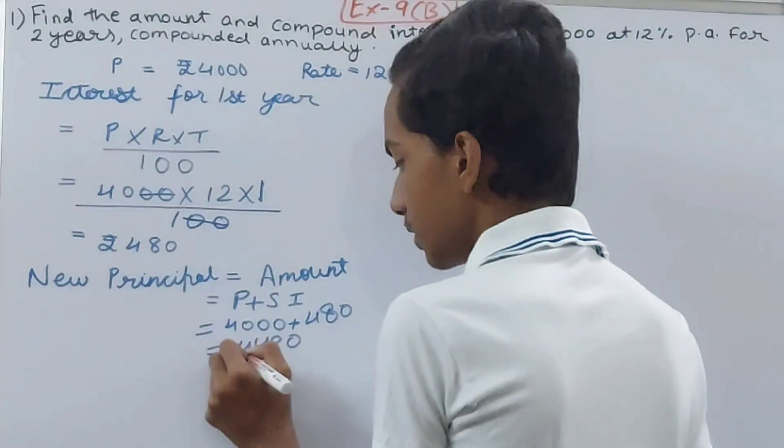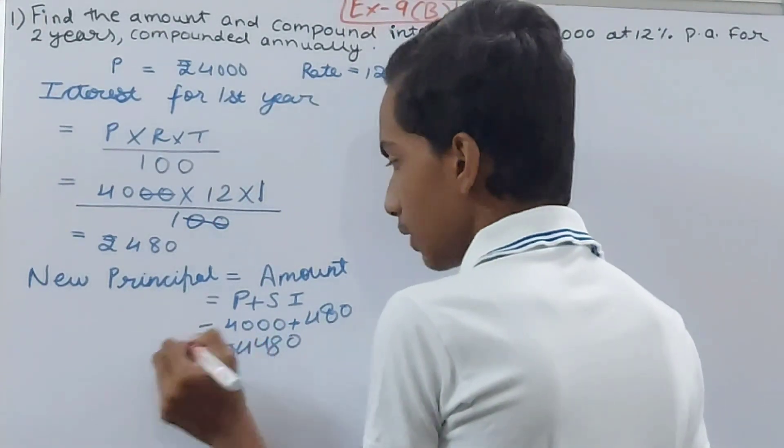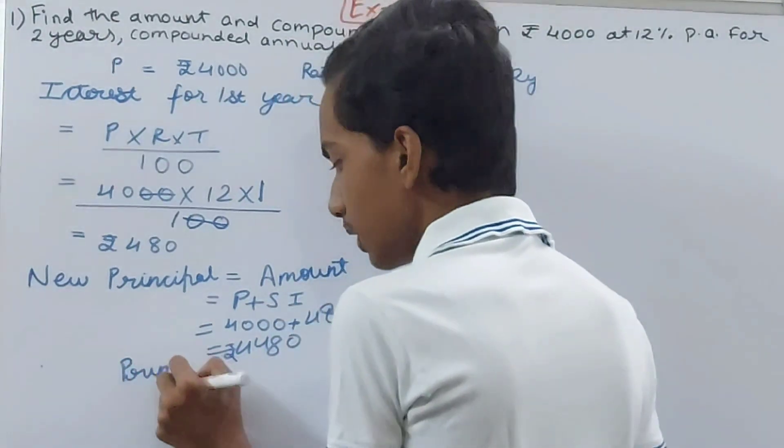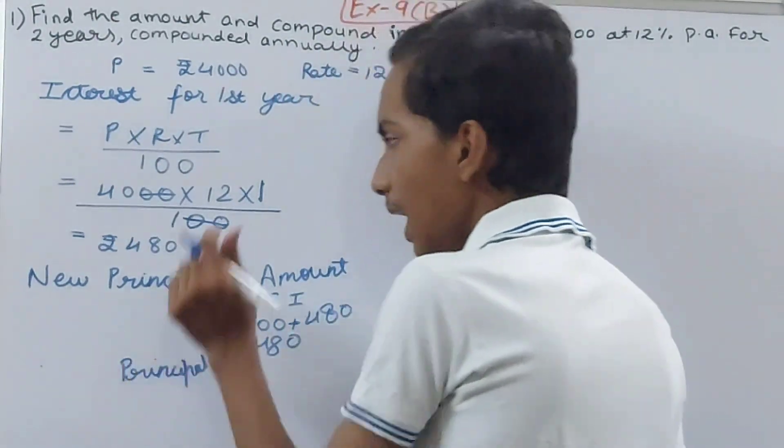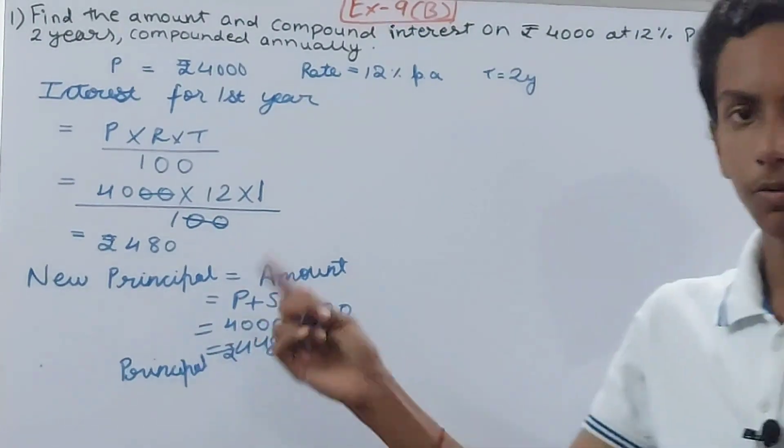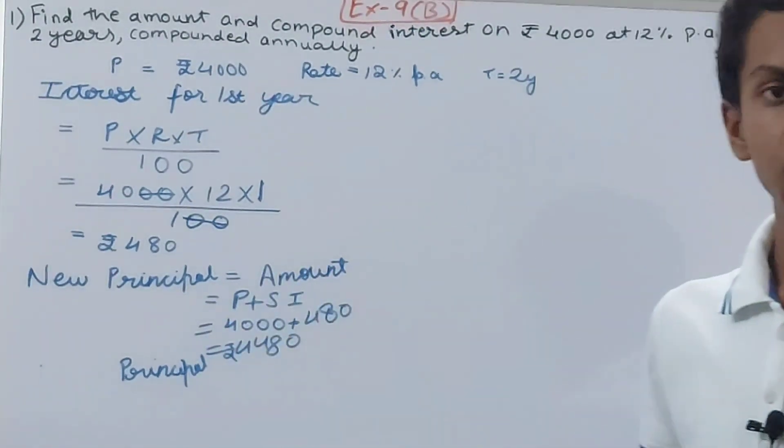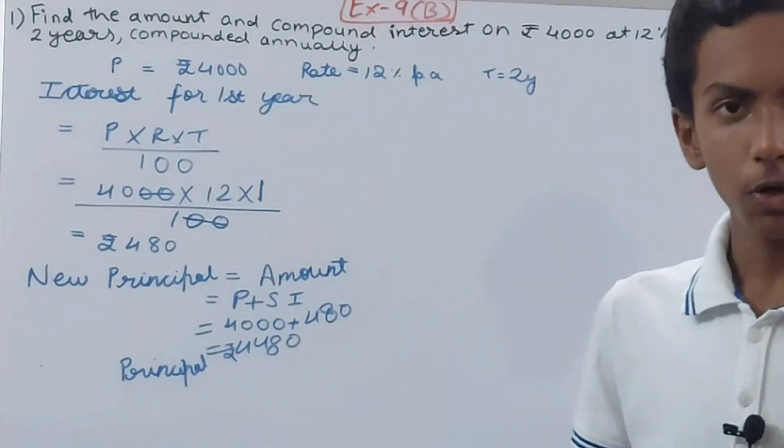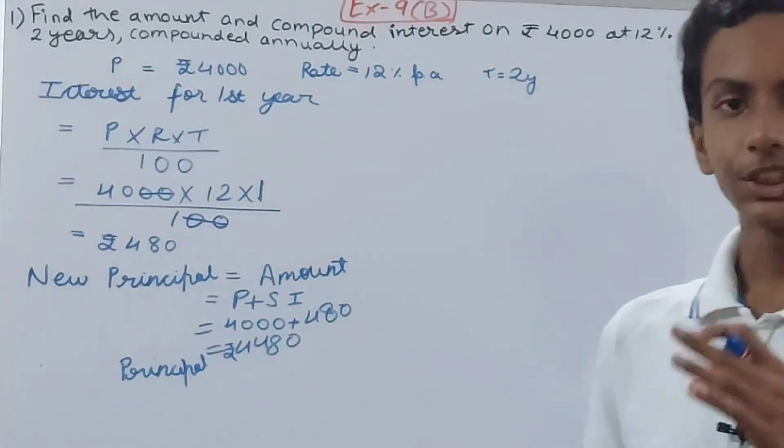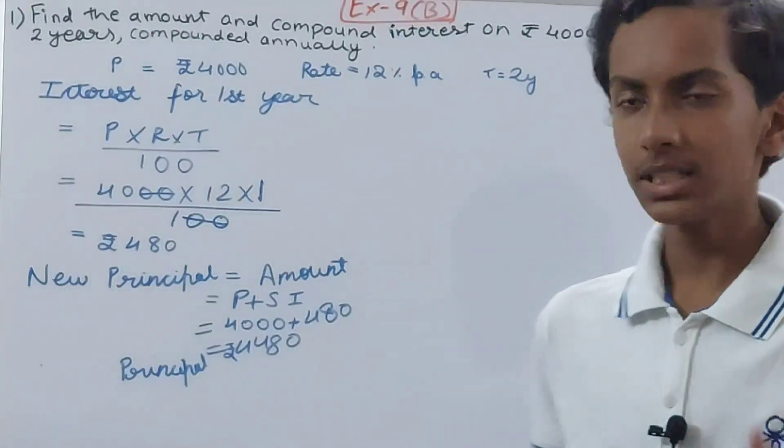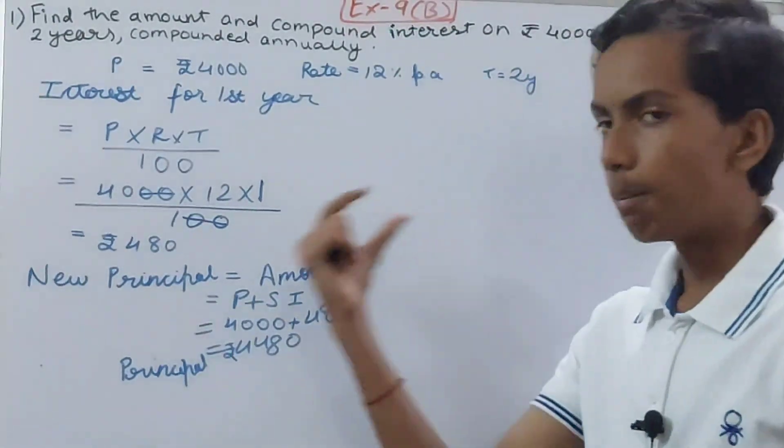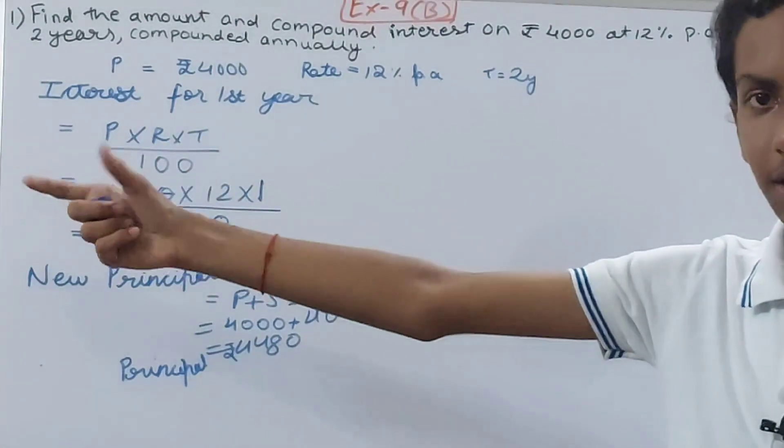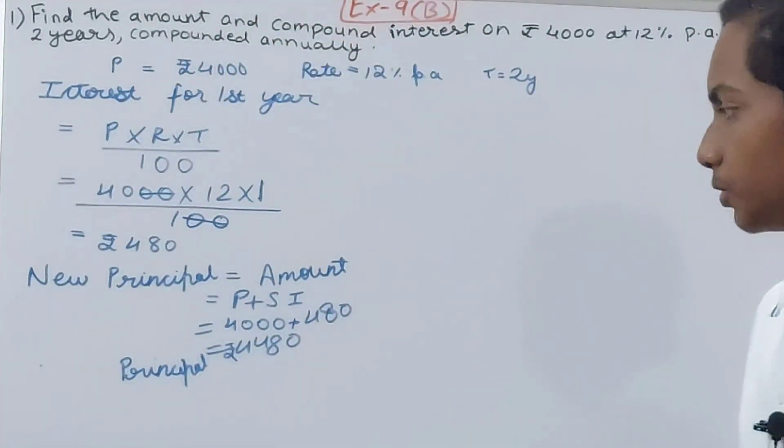So you can see what we are doing is—every time we are calculating interest for one year, then that interest is being added to your principle. This is what is done in compound interest. And what actually is compound interest? It is the final amount minus the original principle, the principle that we had first—that is 4000. So this is not complete yet.